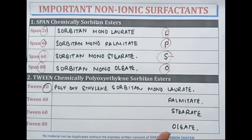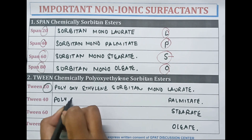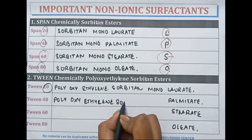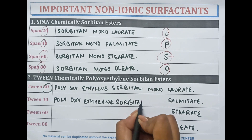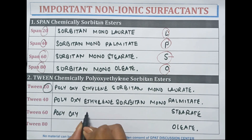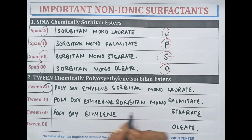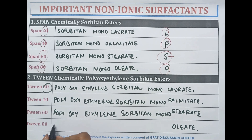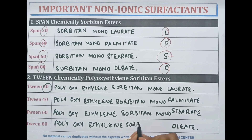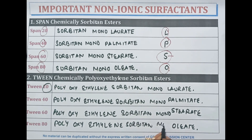The rest of the name is the same, that is polyoxyethylene sorbitan. Polyoxyethylene sorbitan monopalmitate is Tween 40. Polyoxyethylene sorbitan monostearate is Tween 60. Polyoxyethylene sorbitan monooleate is Tween 80.